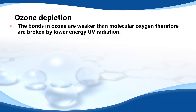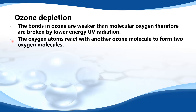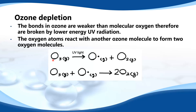Next we look at ozone depletion. The bonds in ozone are weaker than in molecular oxygen, and therefore are broken by lower energy UV radiation. In the first equation, the bonds in ozone are broken in the presence of UV light to form an oxygen radical and a molecule of oxygen, O2. In the second equation, a molecule of ozone reacts with an oxygen radical to form two molecules of O2.